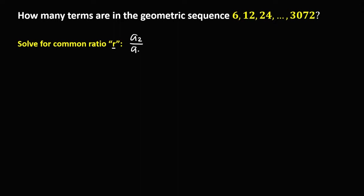In the given sequence, the first term is a₁, the second term is a₂, the third term is a₃, and the last term is aₙ. To solve for the common ratio: a₂/a₁ = 12/6 = 2. Therefore, the common ratio is 2.